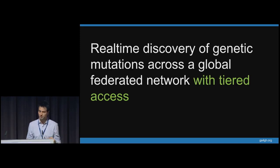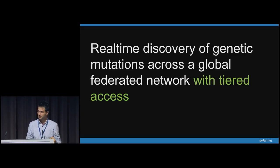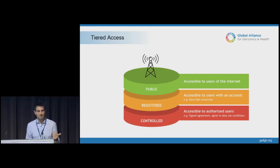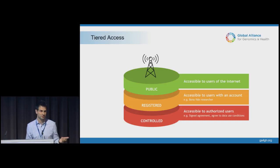So we have a method to search across a large number of beacons in real time. Now we want to spend most of this talk speaking about how we're planning to make beacons a lot more powerful, starting with the concept of tiered access. What we'd like to do is enable progressive disclosure of increasingly detailed and useful clinical metadata along with the beacon response, as we gain an increasing amount of trust in the individual making the query. In other words, a public beacon can say yes, I have information about this variant, but only after going through the necessary steps of authentication and authorization will they gain access to the patient's metadata.